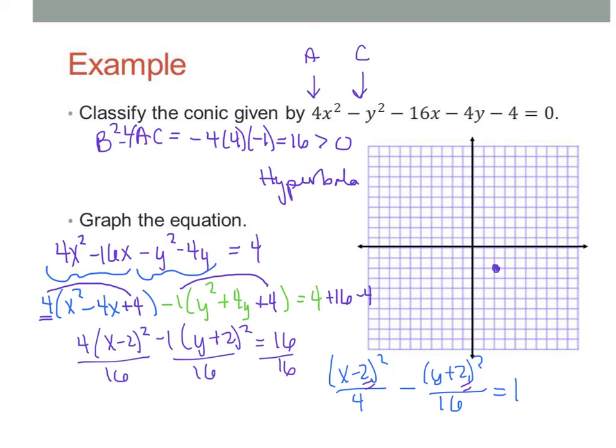And so, a always comes first, so a is going to be 2, and this is going to open left or right because the x squared is first. So, we're going to go left, right, 2. We're going to go up, down, 4.